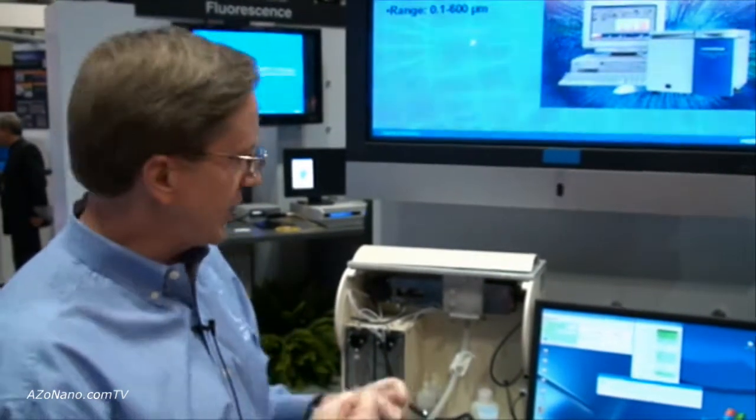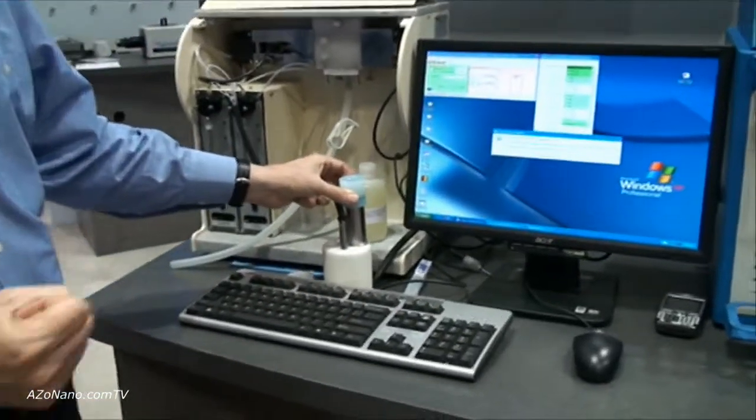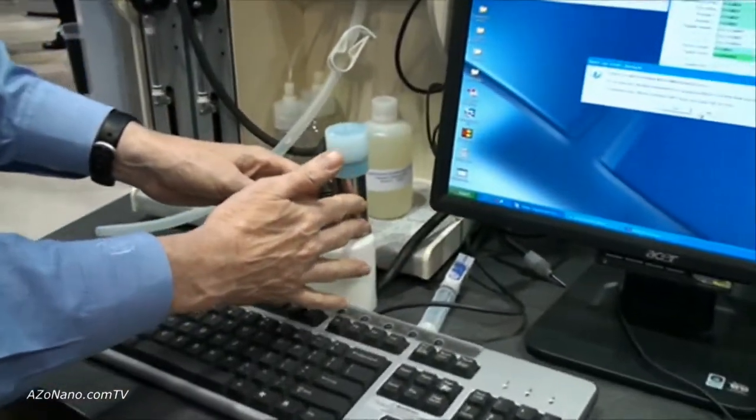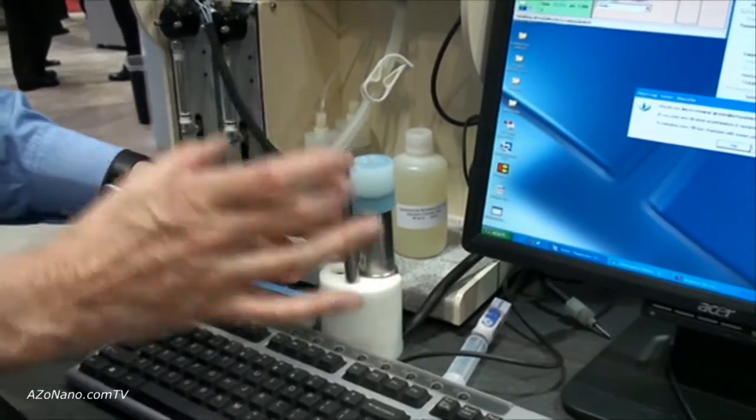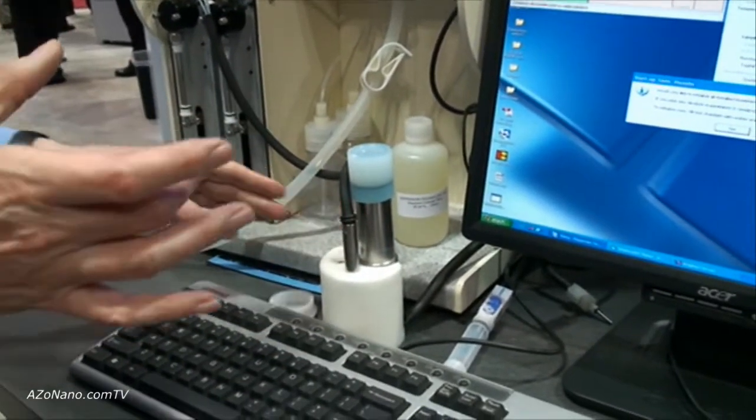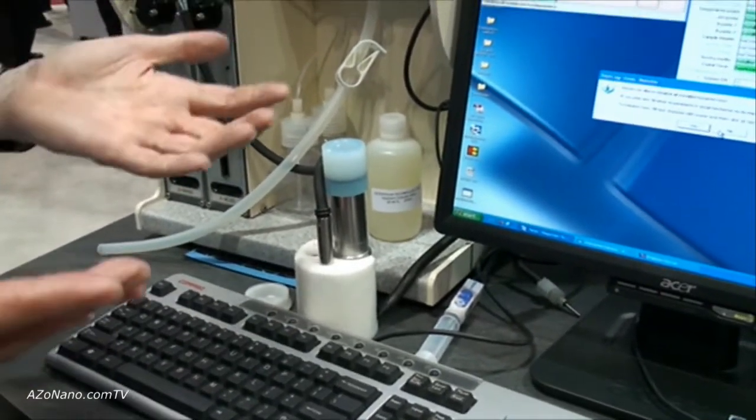And in order to measure that charge on the surface we're going to measure the zeta potential, the charge on the surface of the particles. This is a sensor designed to measure the zeta potential samples again without dilution which is a critical improvement when measuring zeta potential because if we were to dilute the sample we could change the charge on the surface through the dilution process.